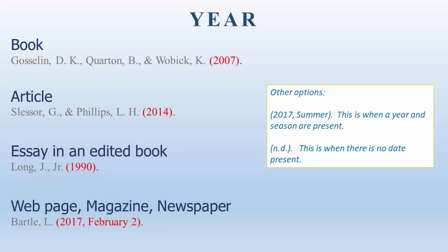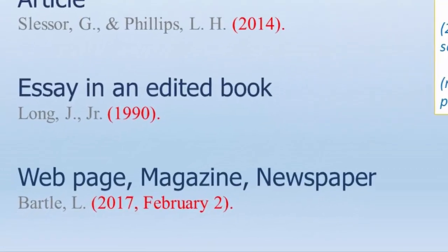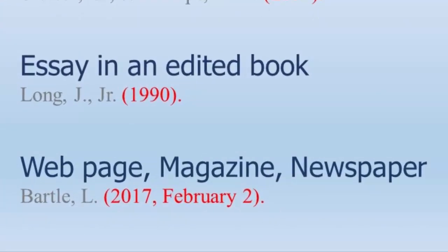After the author's name is the year. The year is wrapped in parentheses, followed by a period. For many items, the year will be sufficient. However, some items, such as web pages, popular magazines, and newspapers, will require greater specificity. A newspaper can come out daily, so providing only a year, or just a year and a month, would not be helpful to find the item you are citing. Magazines can come out weekly or monthly, so you need to provide the date that is most useful.